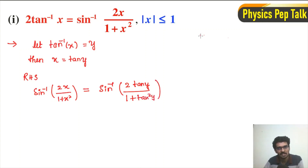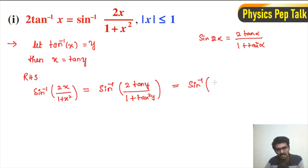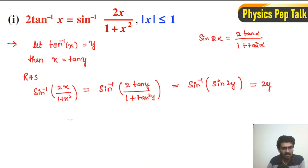Using the identity sin 2α is equal to 2 tan α divided by 1 plus tan square α, substituting α equal to y, we get sin inverse of 2 tan y divided by 1 plus tan square y, which equals sin inverse of sin 2y. Therefore this simplifies to 2y, giving us 2x divided by 1 plus x square equals 2y.